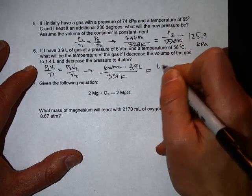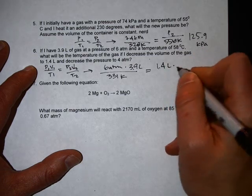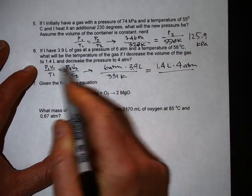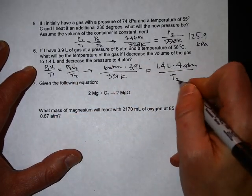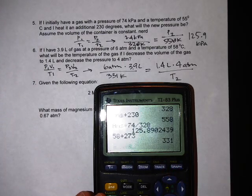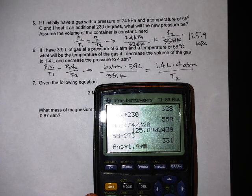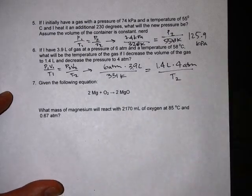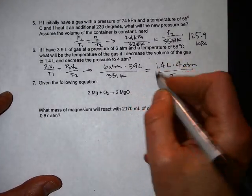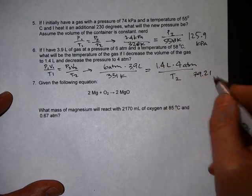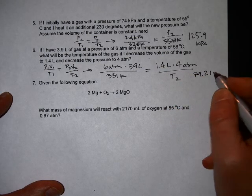Volume goes down to 1.4 liters, pressure goes up to 4 atm, and we're solving for the new temperature, so T2. That would be cross multiply and divide again: that times 1.4 times 4 divided by 6 divided by 3.9, and you get 79.21, we'll call it, and that would be kelvin.